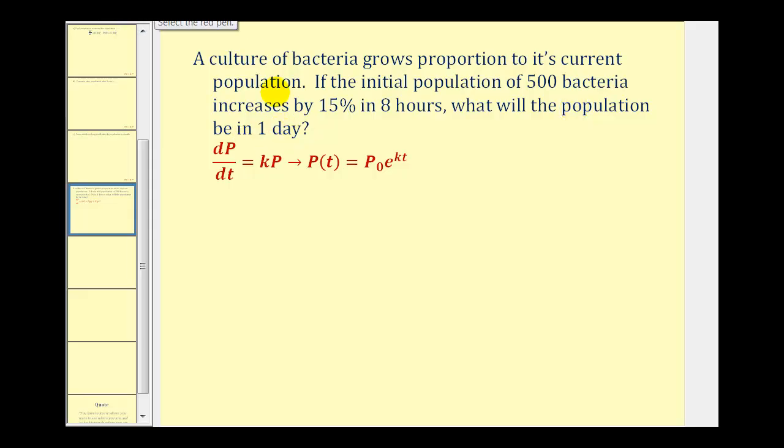The first thing we know is the initial population is 500, so P sub zero equals 500. Next, the population increases by 15% in eight hours, so that means P of eight is going to be 500 plus an increase of 15%. That would be 500 times 1.15.